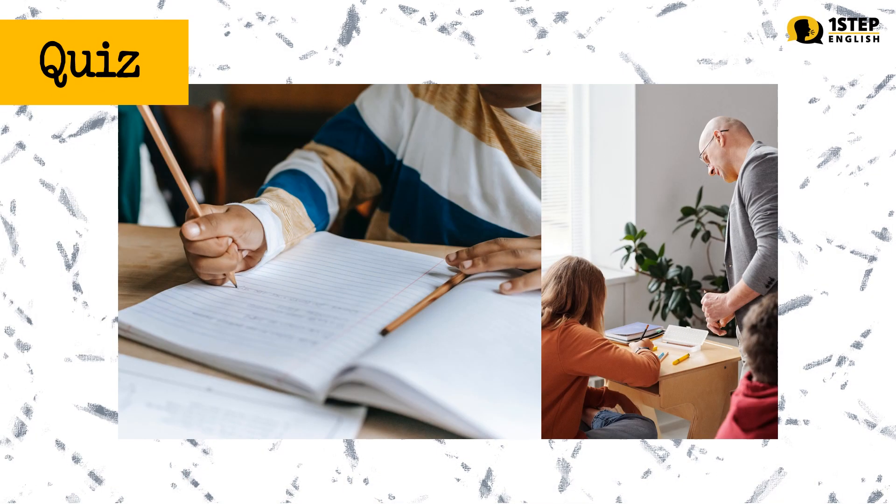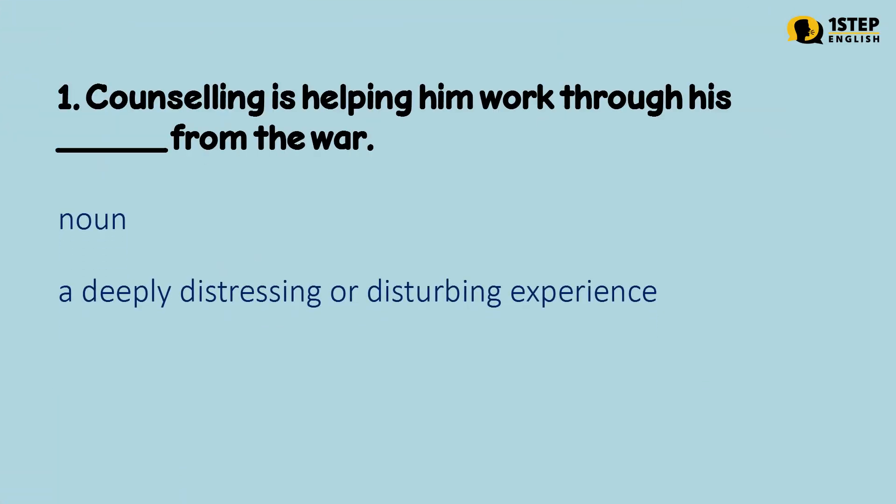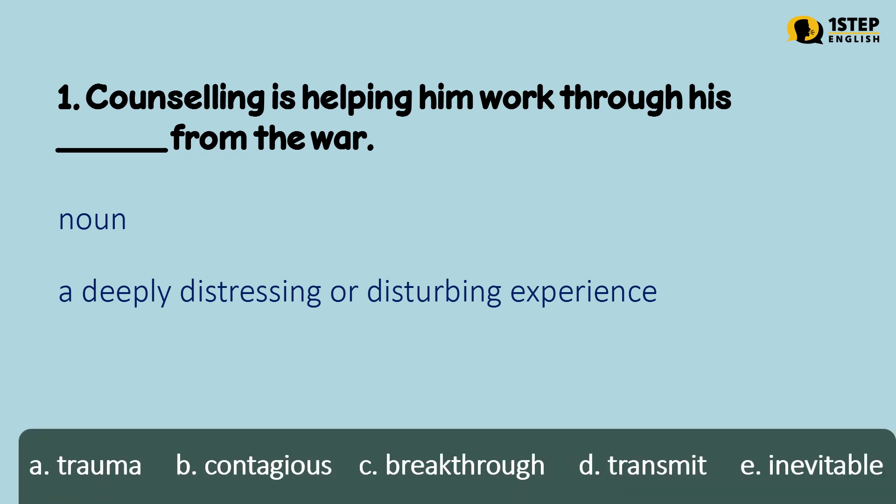Quiz time. Number 1: counseling is helping him work through his ___ from the war. A noun meaning a deeply distressing or disturbing experience. Letter A: trauma. Letter B: contagious. Letter C: breakthrough. Letter D: transmit. Letter E: inevitable. The correct answer is Letter A — counseling is helping him work through his trauma from the war.